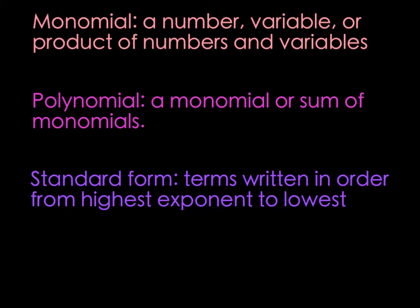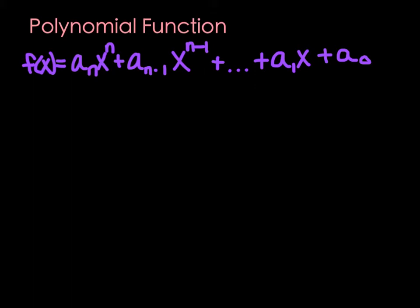Standard form is when we write the polynomial with the terms in order from highest exponent to lowest. A standard polynomial function is written as f of x equals a sub n times x to the nth, where n is the highest power, then the next coefficient times x to the next lowest power, and so on down to the coefficient with just x, and then the constant.